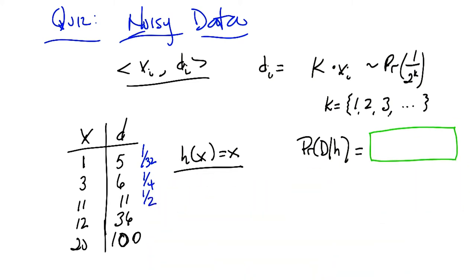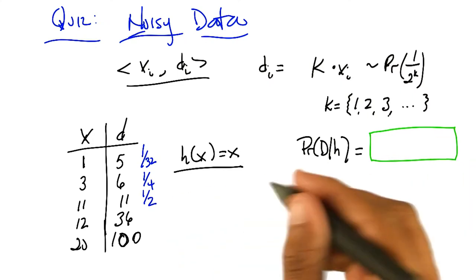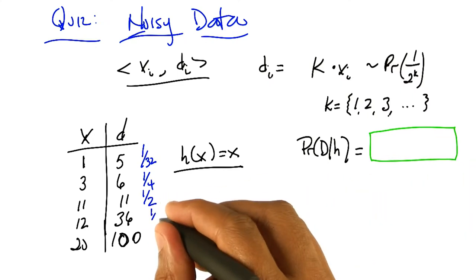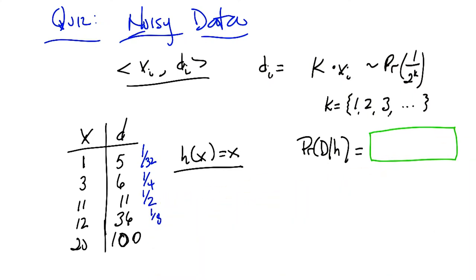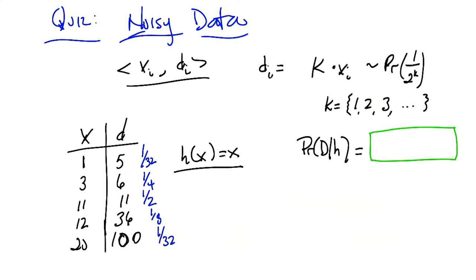Okay, I like this. All right, the next one would be an eighth, because it's tripled. Mm-hm. And the last one is also a multiplier of 5, just like the first one, so that would be 1 32nd as well. Mm-hm.